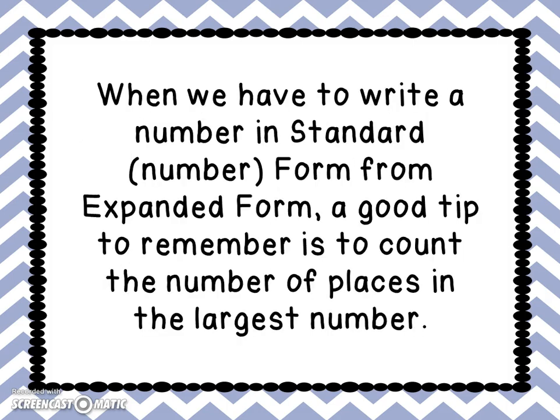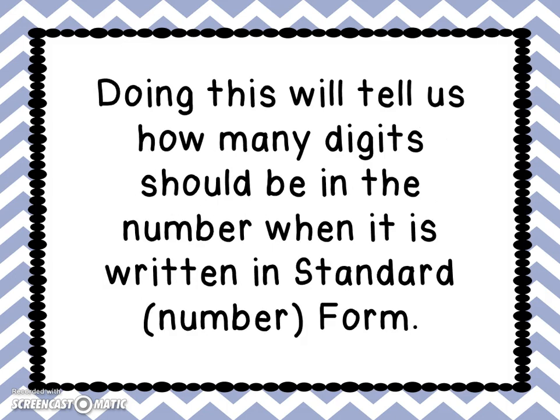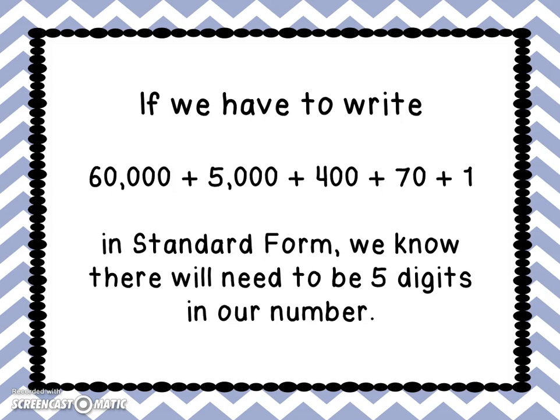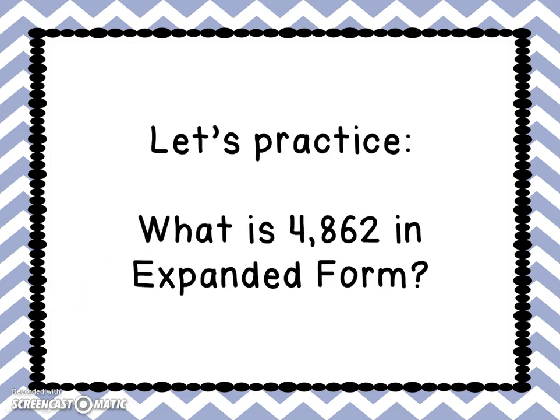When we have to write a number in standard form from expanded form, a good tip is to count the number of places in the largest number. This will tell us how many digits should be in the final number. For example, 60,000 plus 5,000 plus 400 plus 70 plus 1 in standard form will have 5 digits, because 60,000 is our largest number and it has 5 digits in it.